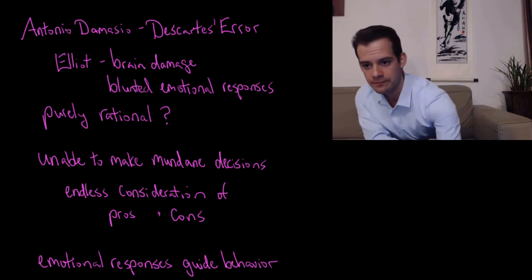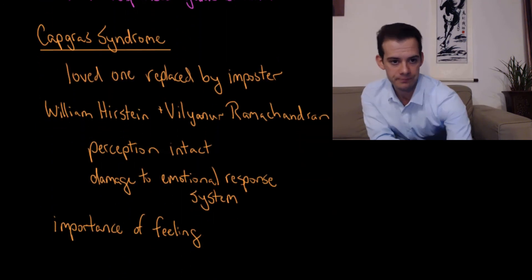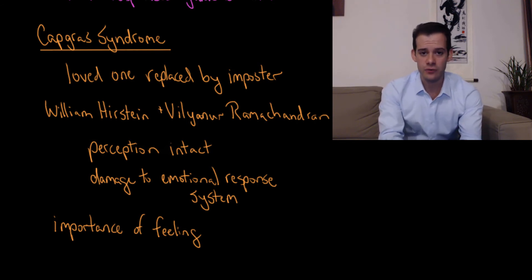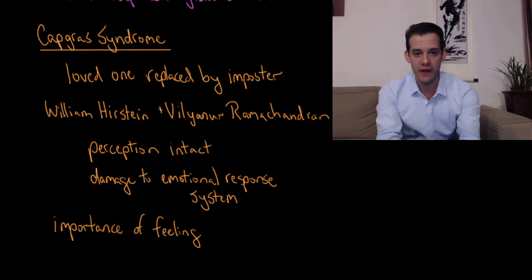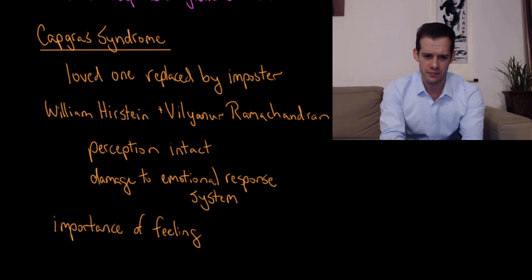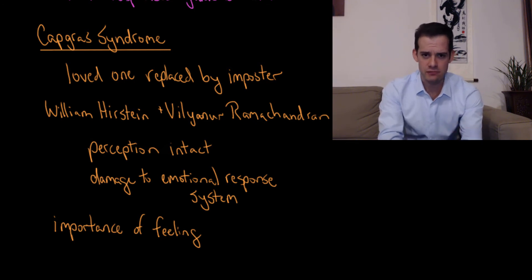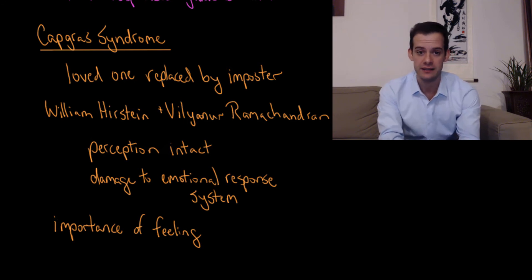We can also see this in a rare condition called Capgras syndrome, or Capgras delusion. In this delusion, a person believes that a loved one has been replaced by an imposter. For example, after some brain damage, a person is in the hospital and their mother comes to visit. They say, 'This person looks exactly like my mother, but she's not my mother — she's an imposter, someone pretending to be my mother.' They clearly recognize their mother, but they have the feeling that it's not really her.